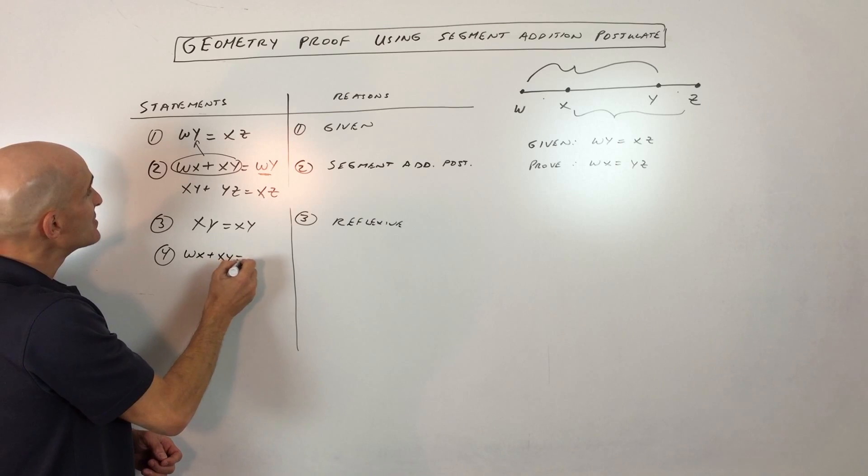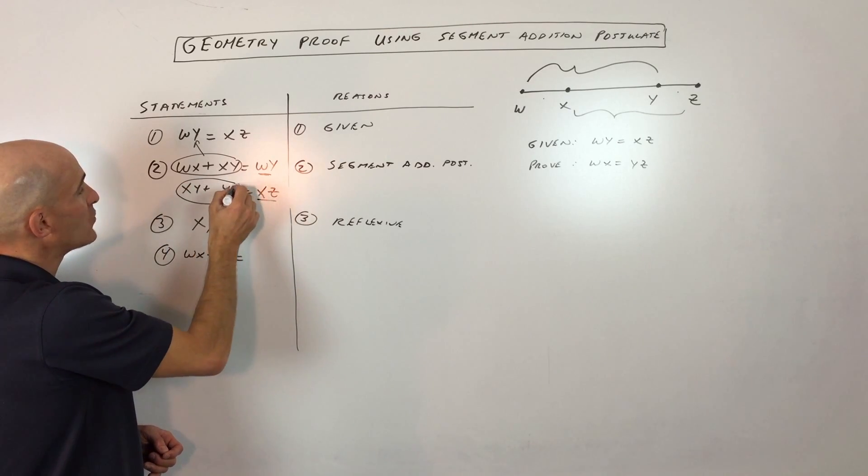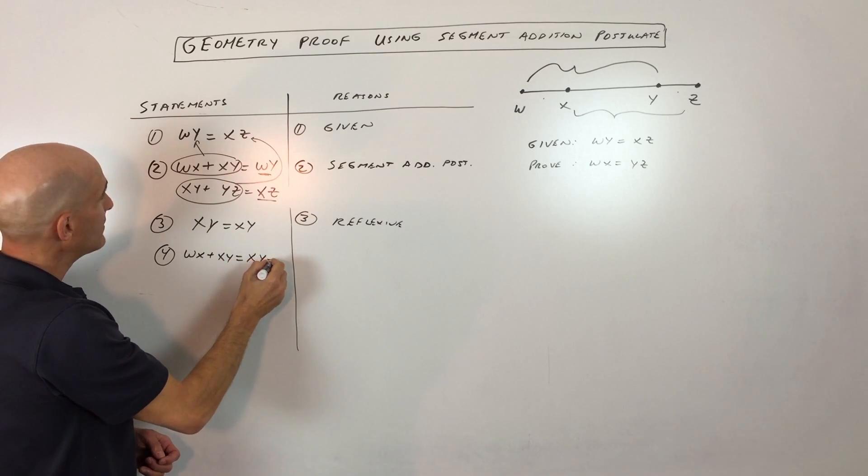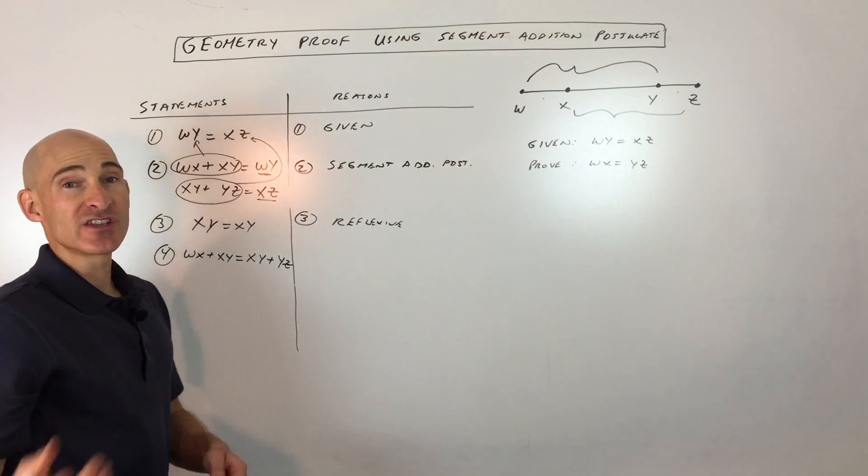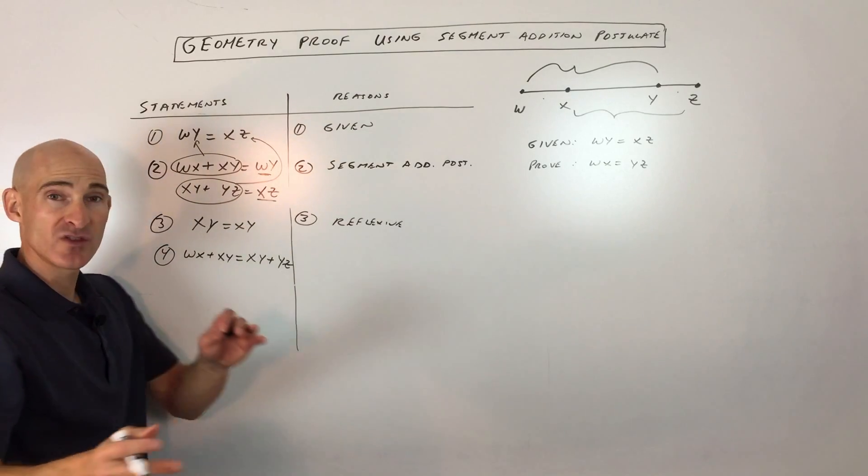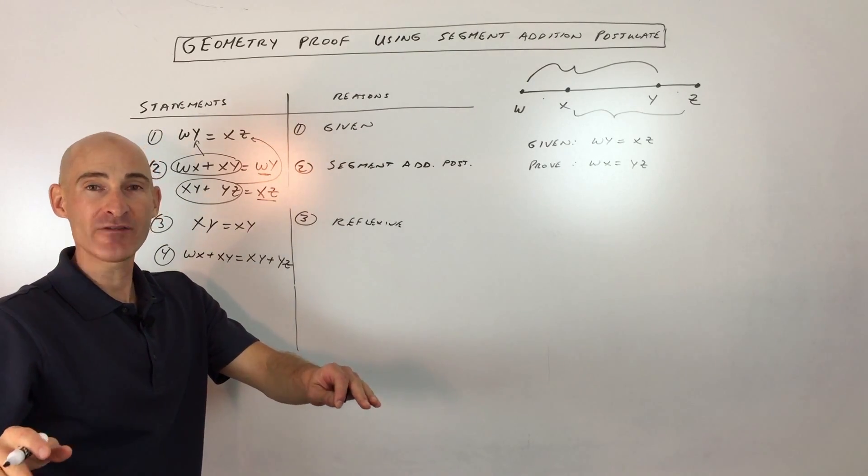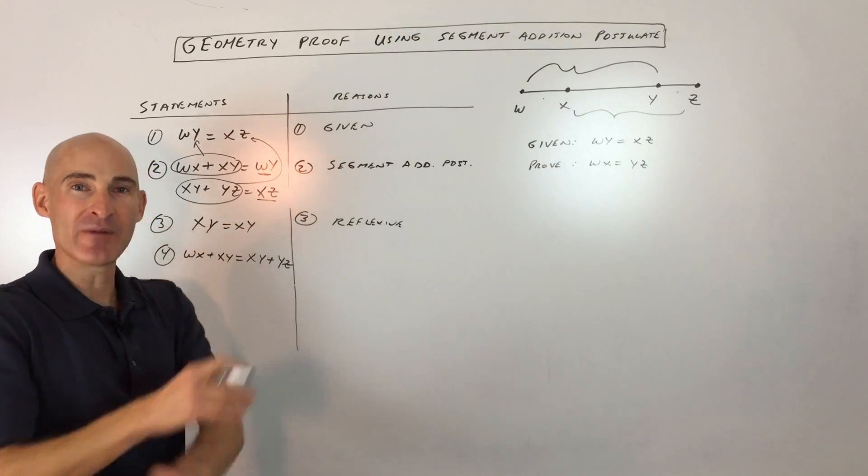And do you know what the reason is for that? And then also for this one, XZ, see how it equals XY plus YZ? So I'm going to put that right there. So what allows me to do that? Well, that's called substitution. And a lot of these proofs, you're going to be using the property of substitution. If two things are equal, it's just like a substitute teacher. If your math teacher isn't there one day, oftentimes they have a substitute math teacher and they just swap them out, right?